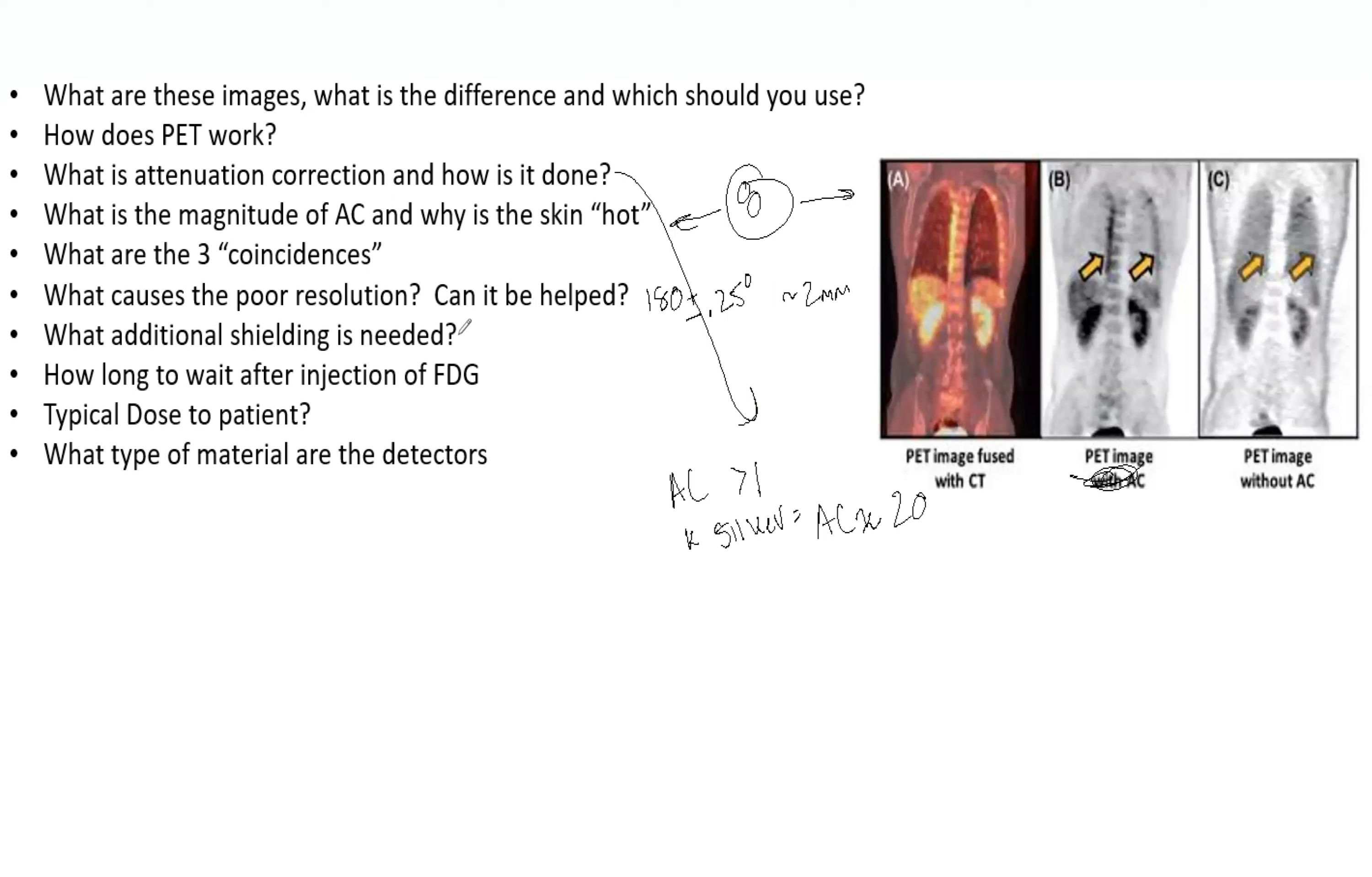So what additional shielding is needed? Remember, these are typically in rooms where there is a CT. So the photons created from PET are 0.511 MeV. And those photons are higher than the energy of typically the 140 KeV CT photons. So CT shielding is about 1.6 millimeters. I'm going to start writing down here. So CT shielding is about 1.6 millimeters, obviously roughly.